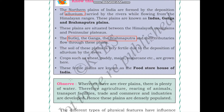The soil of these plains is very fertile due to the deposition of alluvium by the rivers. Alluvium is the deposit carried by rivers and deposited onto the plains - it contains clay, sand, and silt, and this deposit is very fertile. Crops such as wheat, paddy, maize, and sugarcane are grown in the northern plains. These fertile plains are known as the food storehouse of India.